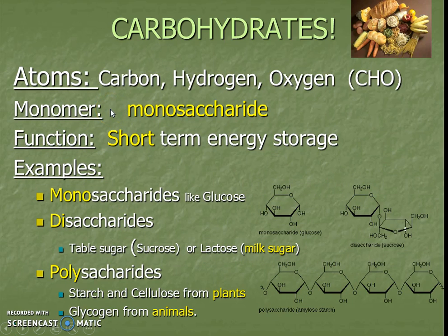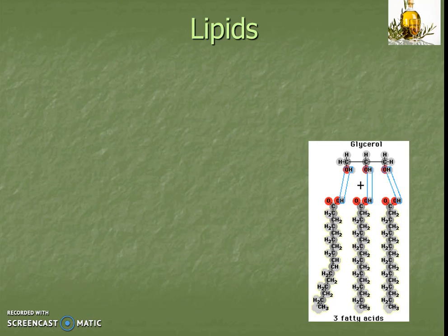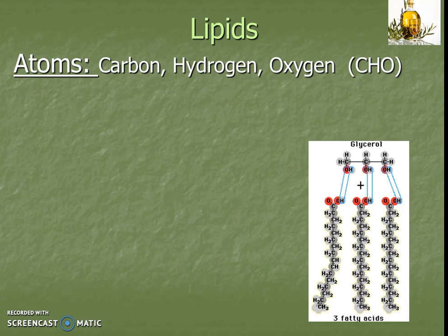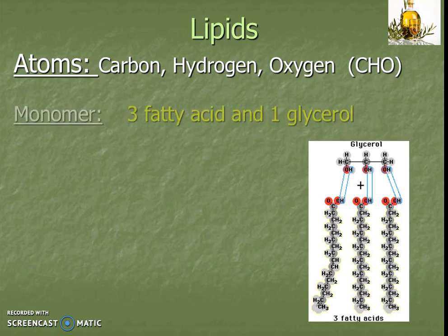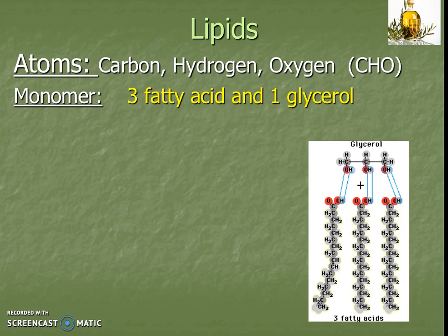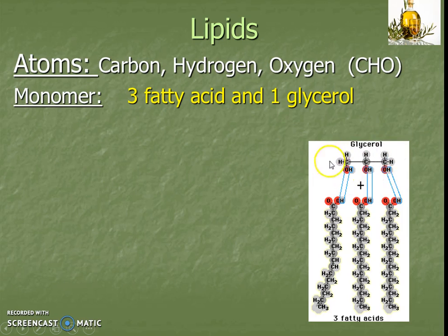Next come lipids — our fats. They are also made up of the same atoms: carbon, hydrogen, and oxygen (CHO). The monomer is three fatty acids and one glycerol. This is the basic building block of almost all fats, oils, or lipids — there are three chains of fatty acids connected to one glycerol on top. This should remind us of our phospholipid shape.